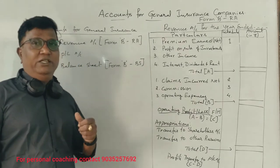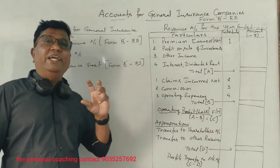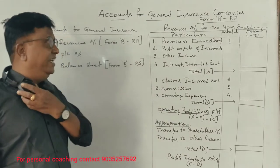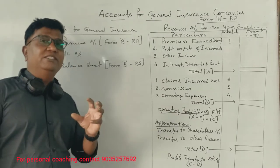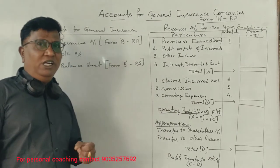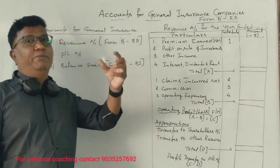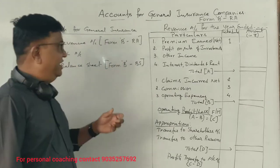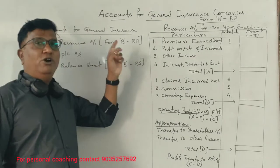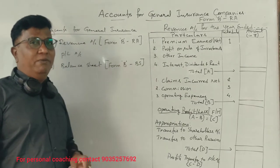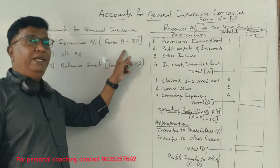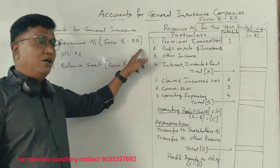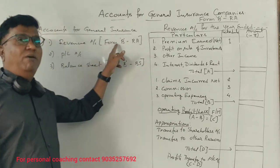Fire insurance and marine insurance. This is a fire insurance business and marine insurance company. One of the general insurance companies is prepared. First of all, the revenue account is prepared — Form B, RA. RA is the revenue account, Form B.